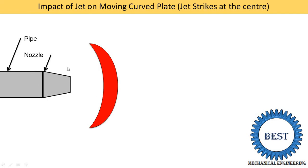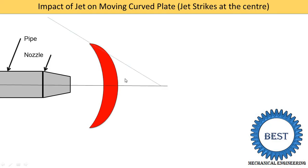This is a pipe, and at the end of the pipe a nozzle is installed. This is the curved plate, and this curved plate is moving. We will learn the parameters of this curved plate — that is, the angle of deflection and the angle theta. With the horizontal direction, the angle of deflection and theta is given.